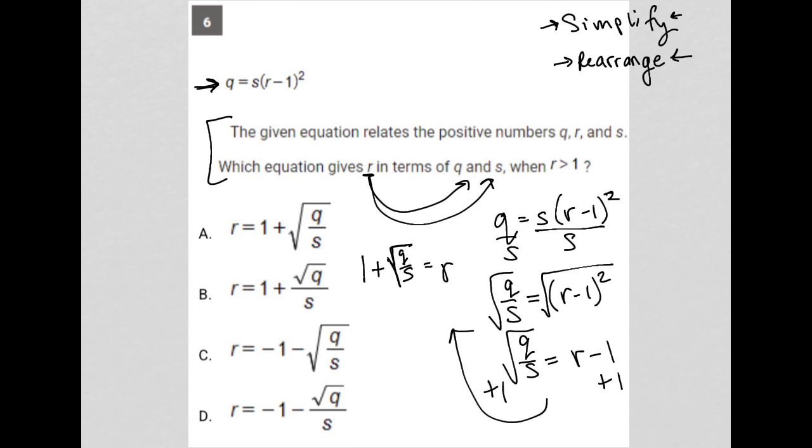So the answer that matches that is choice A. Choice A matches that: R equals one plus the root or the radical of Q over S.